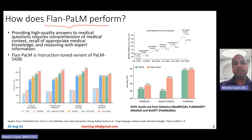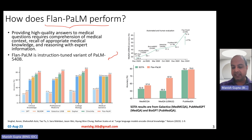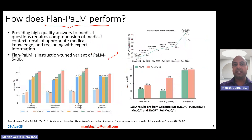So what is the Flan-PaLM model? Flan-PaLM is essentially an instruction-tuned variant of the PaLM model. PaLM is a 540 billion parameter model from Google. They instruction fine-tuned it to create Flan-PaLM, which I've covered in one of my previous videos. What they did with the MultiMedQA benchmark is test on these datasets and come up with results.